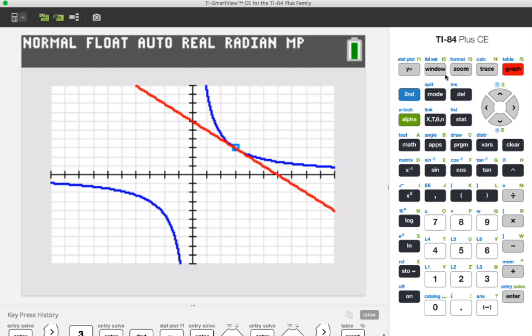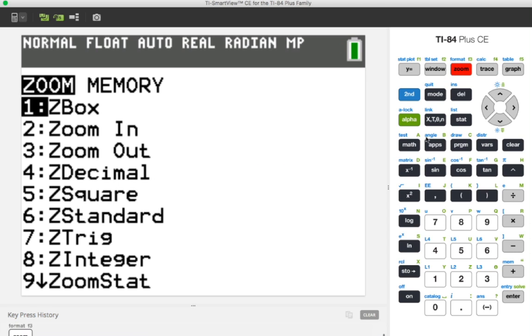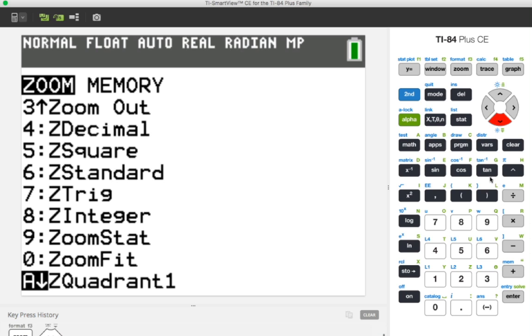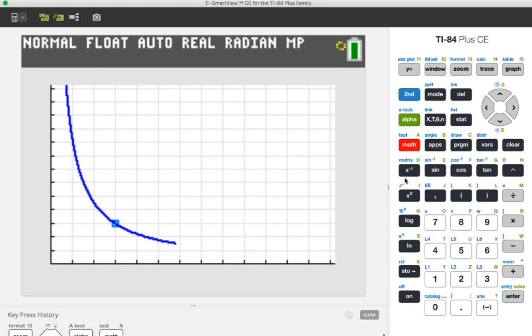So let's go ahead and press the zoom key and let's scroll down. And we want to get to quadrant one. We could press enter here because we're on quadrant one. Another thing you could have done was just press alpha and then we see that we have the A here on the math button, and that would also give us quadrant one.